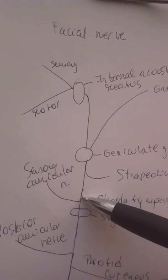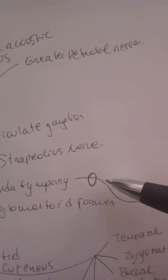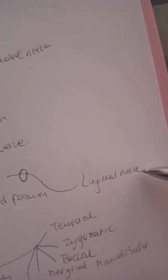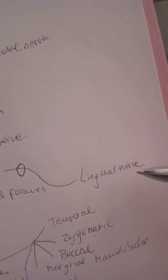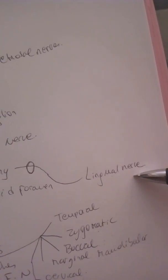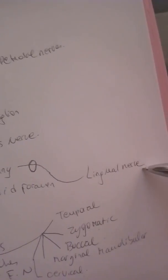Then we'll have the chorda tympani. Chorda tympani will go through the petrotympanic fissure and will join the lingual nerve to innervate the two-thirds anterior tongue and also parasympathetic to the sublingual and submandibular salivary glands.